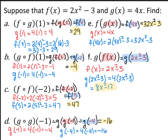For part b, g composed with f of 1 is the same thing as g of f of 1. f of 1 is negative 1. Then plugging negative 1 into g, I end up with negative 4. So g composed with f of 1 is negative 4.